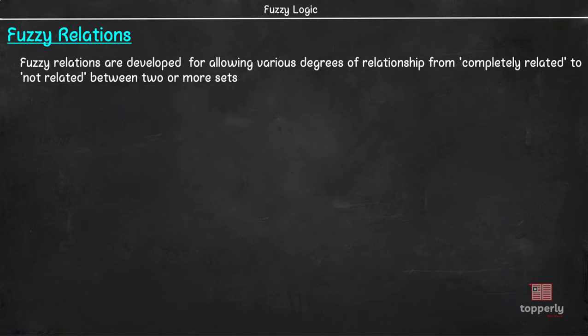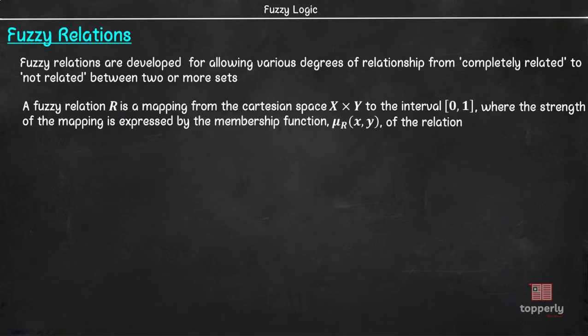Fuzzy relations are developed by allowing the relationship between elements of two or more sets to take on an infinite number of degrees of relationship between the extremes of completely related and not related. In the case of fuzzy relations also, they map elements of one universe to those of another universe through the cartesian product of the two universes. However, unlike crisp relations, here the strength of relation between ordered pairs of the two universes can take any value between 0 and 1 both inclusive.